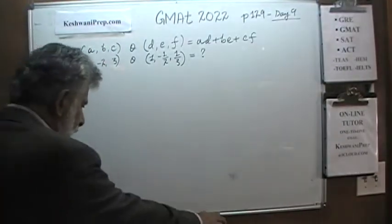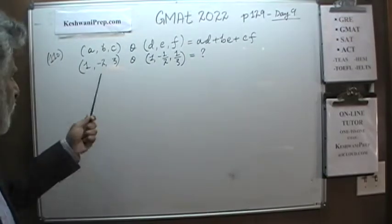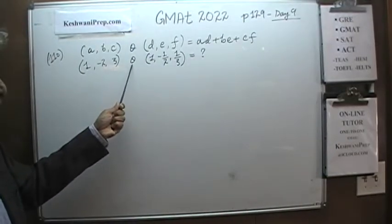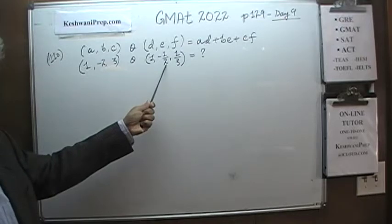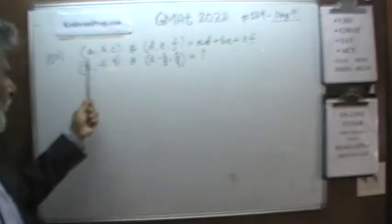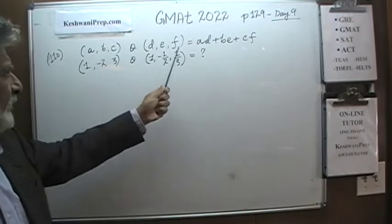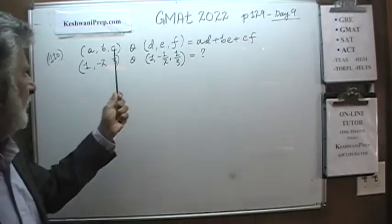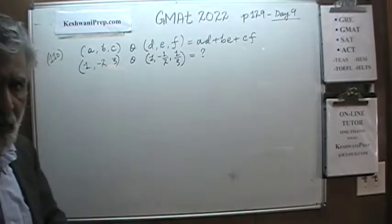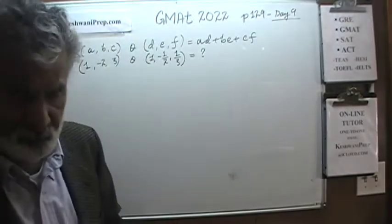The very first problem is already on the blackboard. We are told that we have three numbers on which we perform some operation with three other numbers, and this is the result. Essentially it is simply A times D, plus B times E, plus C times L. That is what it is. Very simple, very straightforward. A gift.